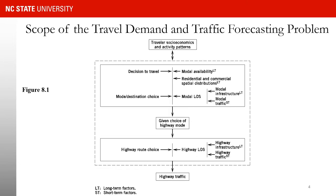Let's continue the conversation from the previous slide. Here you see a graph that shows how different things interact with each other and eventually lead to the traffic we observe in our highway system. There are three boxes that are interacting with each other.